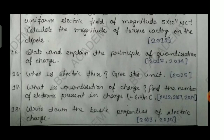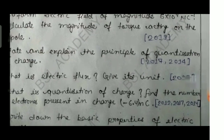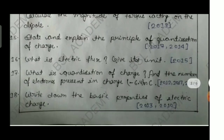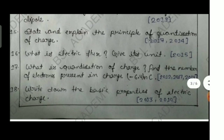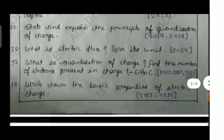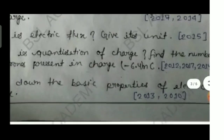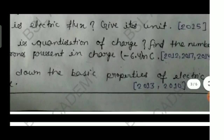Question fifteen: state and explain the principle of quantization of charge — a property of electric charge — asked in 2017 and 2014. Question sixteen: what is electric flux? Give its unit. Question seventeen: what is quantization of charge? Find the number of electrons present in a charge of minus 6.4 nanocoulomb (nC stands for nanocoulomb), asked in 2012, 2017, and 2014.